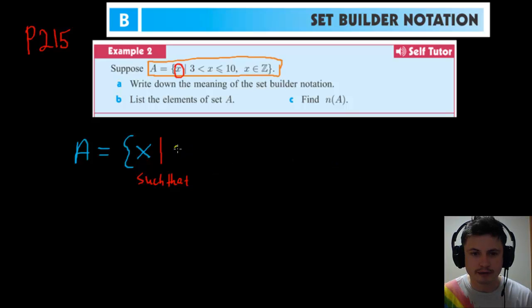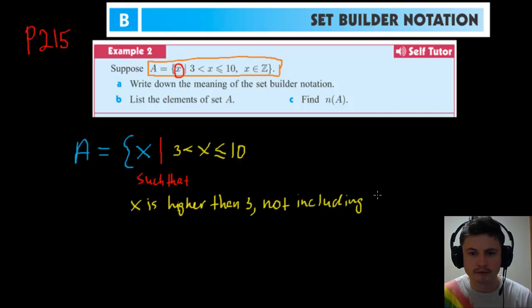Then we have an interval here. This is our X and it's between these numbers. I hope you remember how inequalities work. This means that our X is higher than 3, not including 3 because that's why there's no equality here. It's higher than 3 not including 3, but it is lower than 10 including 10. And then the last part right here tells us what kind of numbers these are.